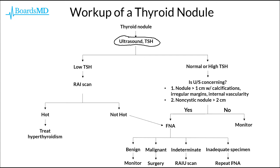So overall, there are really two pathways that get us to this fine needle aspiration, or FNA. The first is that we perform an RAI scan and find that the nodule is not hot — that it is cold — or we see initially from the ultrasound that the lesion is concerning for malignancy based on these features. And from that FNA, in most cases, we will be able to determine whether or not this thyroid nodule is malignant. However, in some cases, we will not be able to tell until we have a surgical or biopsy sample.